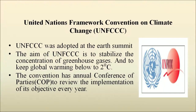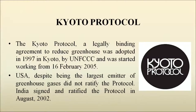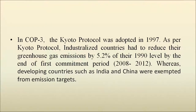The Convention has an annual Conference of Parties known as COP to review the implementation of its objectives every year. The Kyoto Protocol, a legally binding agreement to reduce greenhouse gases, was adopted in 1997 in Kyoto, Japan by UNFCCC, and came into force on 16 February 2005. Despite being the largest emitter of greenhouse gases, the USA did not ratify the protocol. India signed and ratified the protocol in August 2002. As per the Kyoto Protocol adopted in COP 3, industrialized countries had to reduce greenhouse gas emissions by 5.2% of their 1990 level by the end of the first commitment period 2008–2012. Developing countries such as India and China were exempted from emission targets.